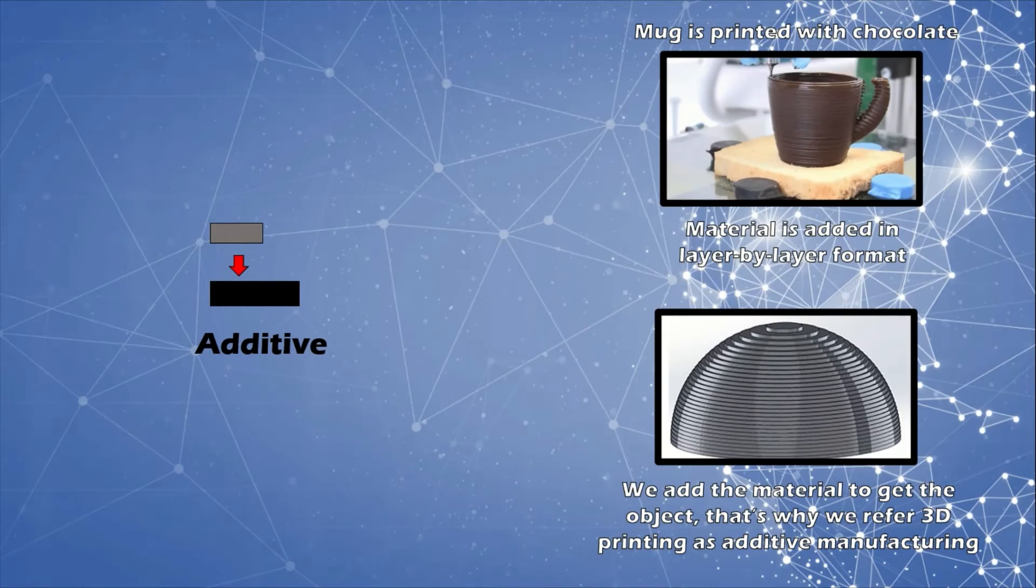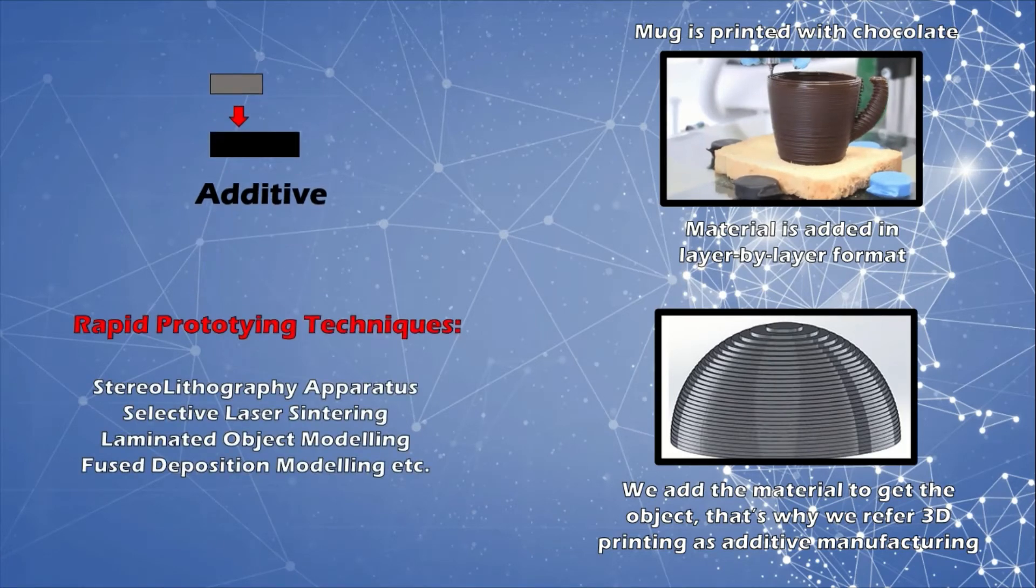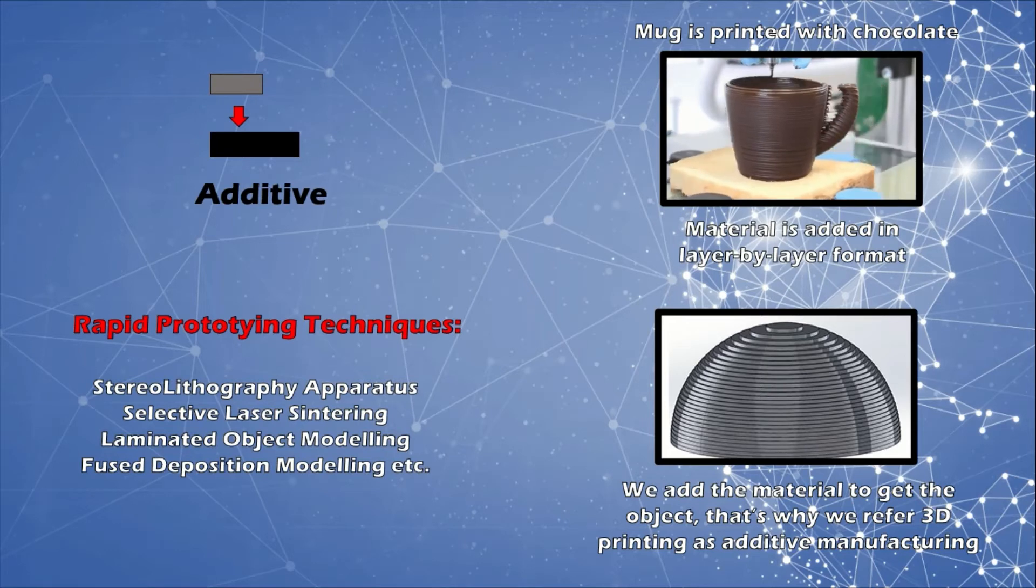Most forms of rapid prototyping processes, such as stereolithography and selective laser sintering, fall into the additive fabrication processes category.